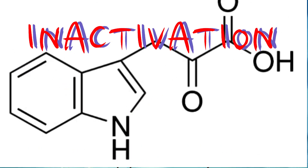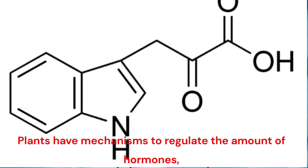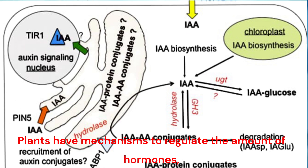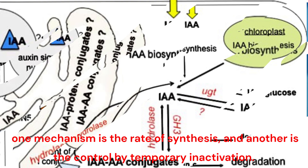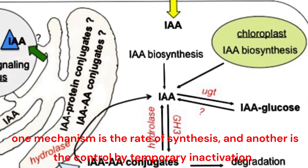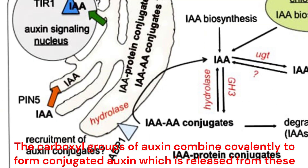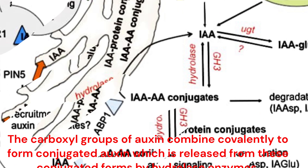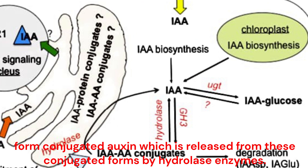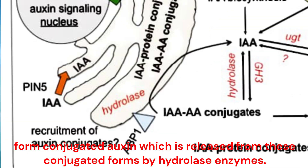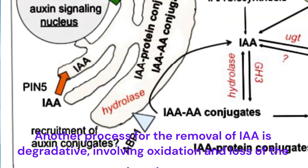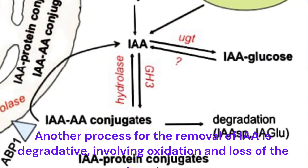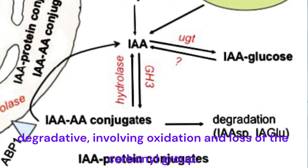Inactivation: Plants have mechanisms to regulate the amount of hormones. One mechanism is the rate of synthesis, and another is control by temporary inactivation. The carboxyl groups of auxin combine covalently to form conjugated auxin, which is released from these conjugated forms by hydrolase enzymes. Another process for the removal of IAA is degradative, involving oxidation and loss of the carbonyl group.